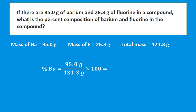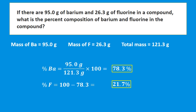To find the percent of barium, we take the mass of barium, 95.0 grams, divided by 121.3 grams, and multiply by 100. That gives us 78.3%. For the percent of fluorine, we can take 26.3 divided by 121.3 multiplied by 100, or simply subtract 78.3 from 100, because the total percent adds to 100 and we only have two components. The percent of fluorine is 21.7%.